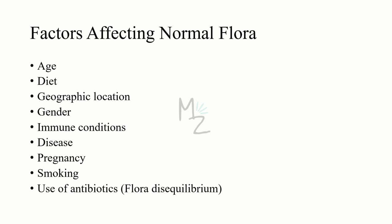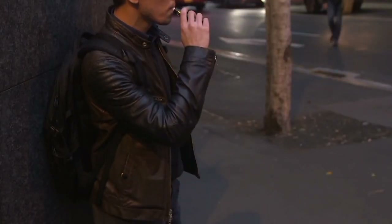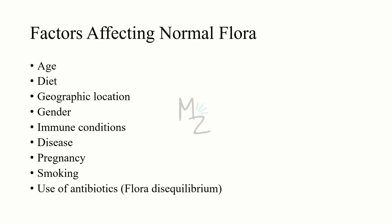Gender. The normal flora of males and females is different, if not much, but maybe slightly. Immune conditions: if a person is immunocompetent, normal flora is normal, but if a person is immunocompromised, normal flora can lead to disease conditions. A person recently recovered from a disease will be a carrier of that organism, which is now part of their normal flora but not others'. Pregnancy can also change the composition of normal flora. Smoking can change the composition of oral microbiota, and use of antibiotics can also lead to flora disequilibrium, as antibiotics kill some bacteria, leading to a change in normal flora.